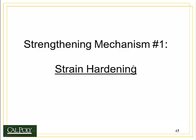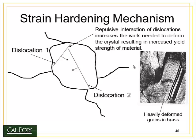Let's look at strengthening mechanism number one: strain hardening. Imagine we have a grain where two dislocations are traveling along different planes in different directions. When they interact, there's a repulsive interaction between them, which increases the amount of work needed to keep the dislocations moving. If the dislocations can't move, then there's no plastic deformation, and the strength has increased. Here's a picture of a heavily deformed piece of brass — you can see all the slip lines. Where dislocations intersect and repel, the grain is now stronger than before. This is strain hardening: if you create plastic strain, the metal gets stronger.